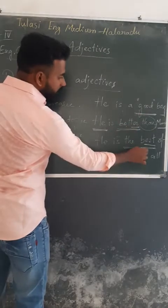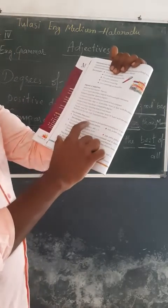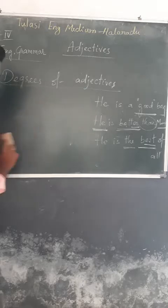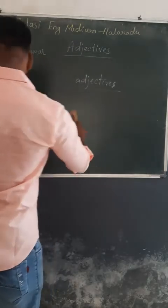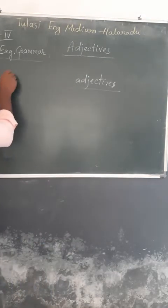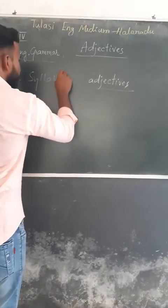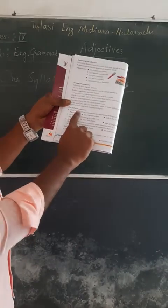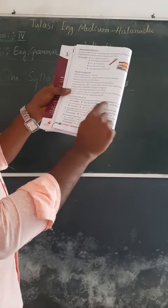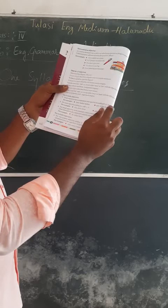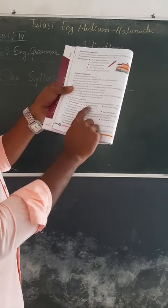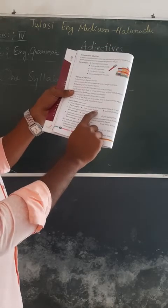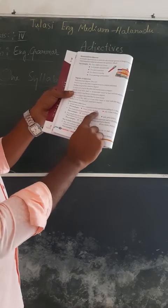For one-syllable adjectives, comparatives end in -er and superlatives end in -est. For example: 'hard,' 'harder,' 'hardest'; 'rich,' 'richer,' 'richest.' For adjectives ending in -e, just add -r and -st: 'nice,' 'nicer,' 'nicest'; 'pale,' 'paler,' 'palest.' These are the rules for small adjectives.